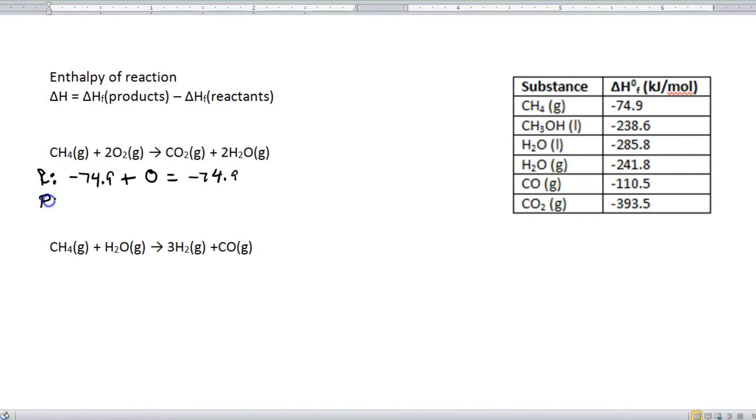Step number two. Calculate the delta H of the products. So we're going to do the same thing. Alright, so here we go. CO2 is right here. That is negative 393.5. So negative 393.5. Plus H2O. Now pay attention that this is a gas, not a liquid. So we're going to use the negative 241.8. So negative 241.8. But there are two of them. The coefficients must be taken into account. So we're going to take that and multiply it by two.